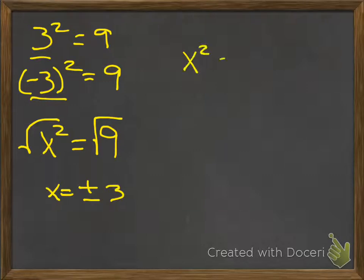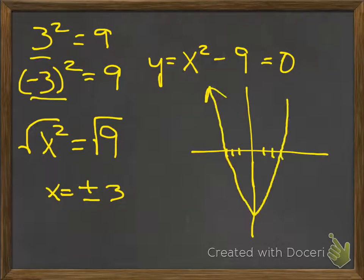When you take the square root algebraically, I want to see two answers. Here's why. Remember when you graphed y equals x squared minus 9 and found the zeros?